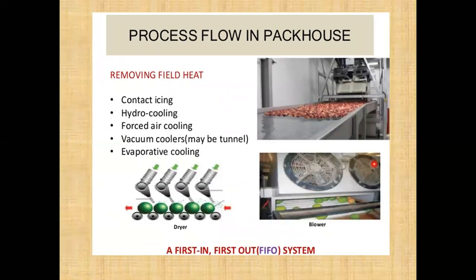Then next is pre-cooling. In pre-cooling we are removing the field heat. Different methods of pre-cooling use different mediums — air, water, ice, or evaporation of surface water. Any method can be preferred: contact icing, hydro cooling, forced air cooling, vacuum cooling, or evaporative cooling — as per the type of commodity.